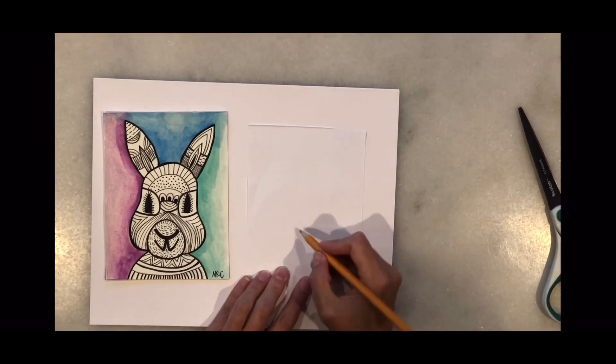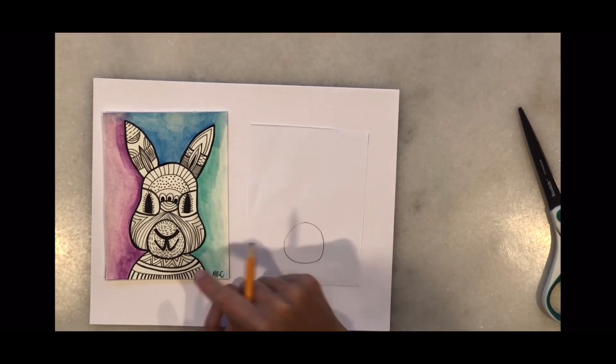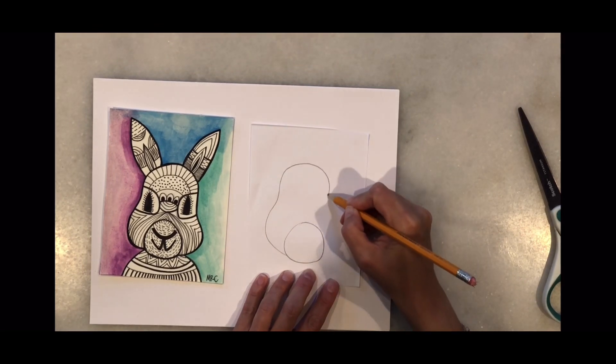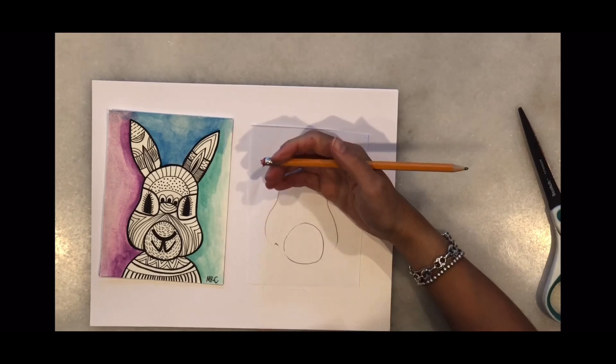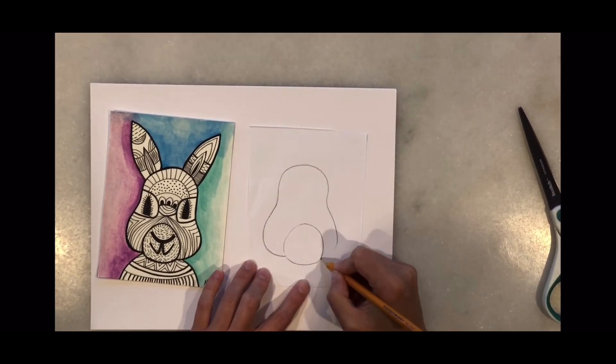Now we're ready to start drawing. We're going to begin with that middle circle and then continue with the head. Remember to erase and fix it as many times as you need. It's okay to make mistakes. It's part of the process.